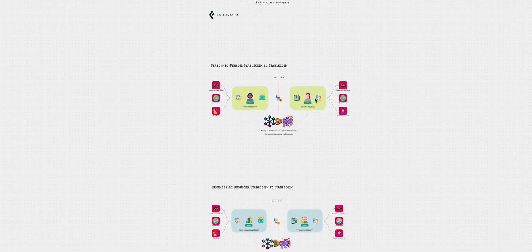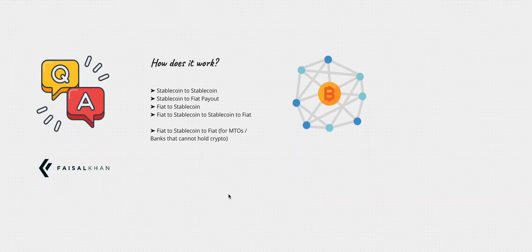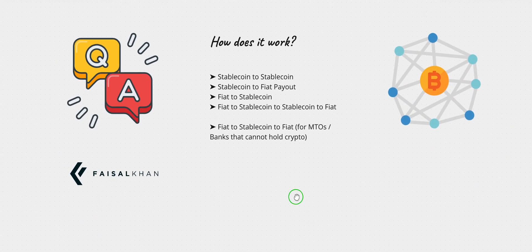So those are the examples I've talked about — person to person, business to business with stablecoins. The fun part is going to be in the next video, which will cover stablecoins to fiat for money transfer operators and banks that cannot hold crypto. For example, if you are an MTO in a part of the world where crypto is not defined or is prohibited, how do you deal with stablecoins and architect a solution? That's the one we'll do later. This is Faisal Khan signing out — if you have a question or comment, put it in the comments below and I'll speak to you soon.